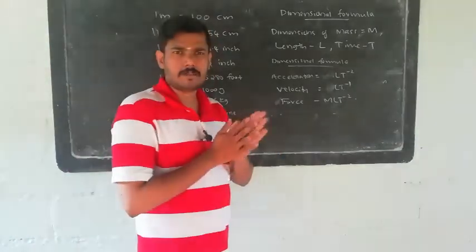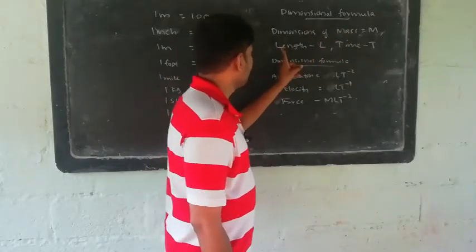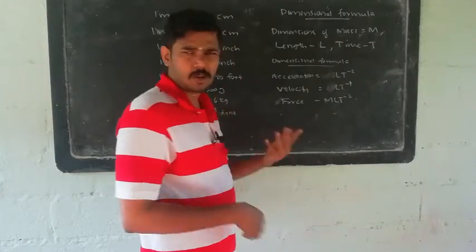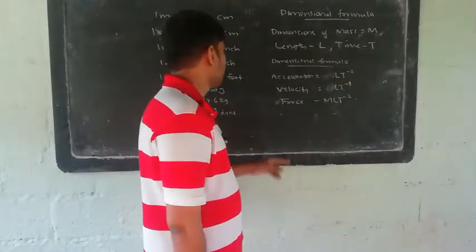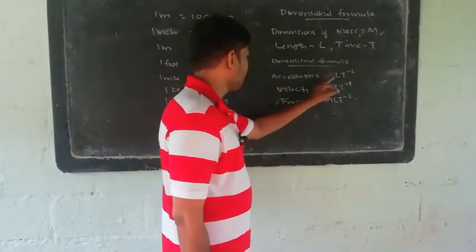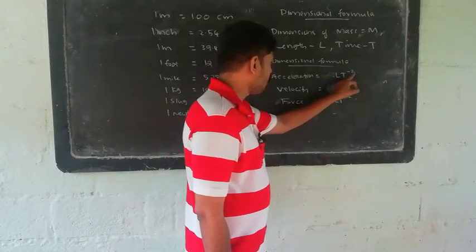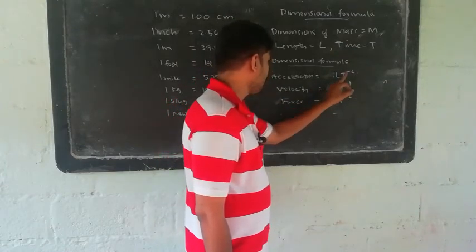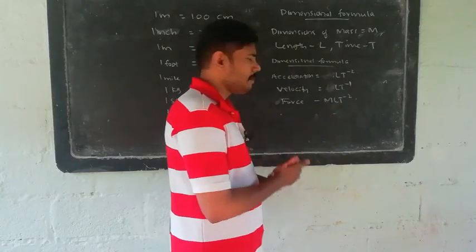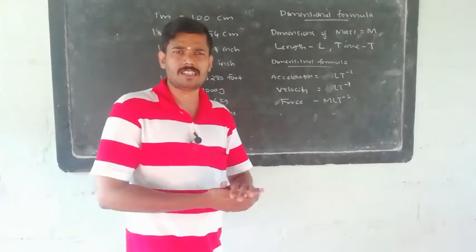In the dimensional formula, mass has dimension M, length has dimension L, and time has dimension T. Acceleration has dimension LT⁻². Velocity has dimension LT⁻¹. Force has dimension MLT⁻².